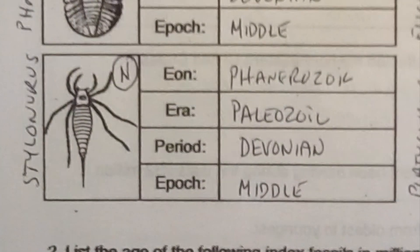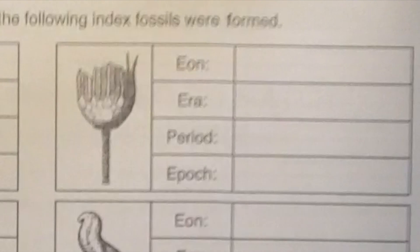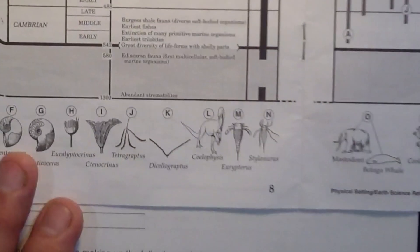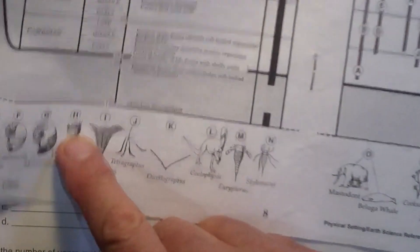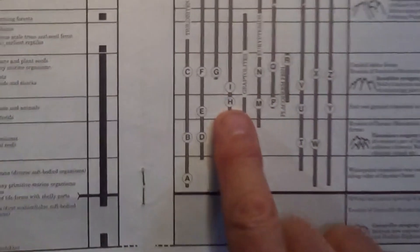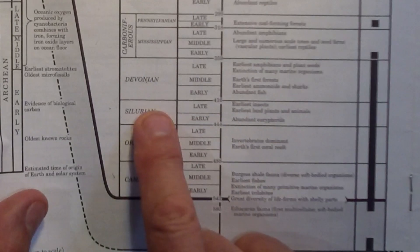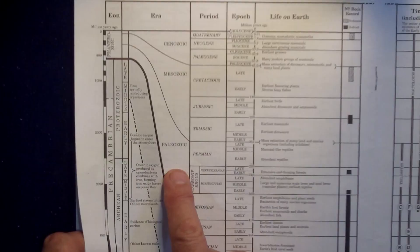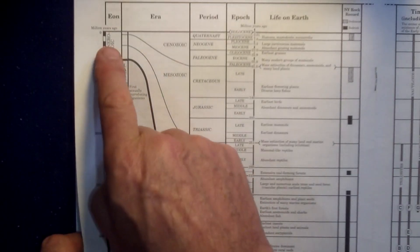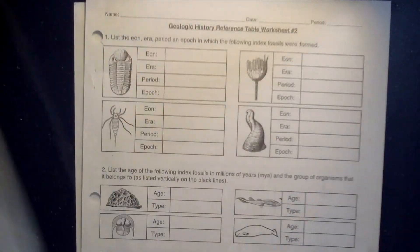The third organism matches up with letter H on the list. Letter H matches up over here, and if I go off to the side, I see that it is Late Silurian, Paleozoic, Phanerozoic.